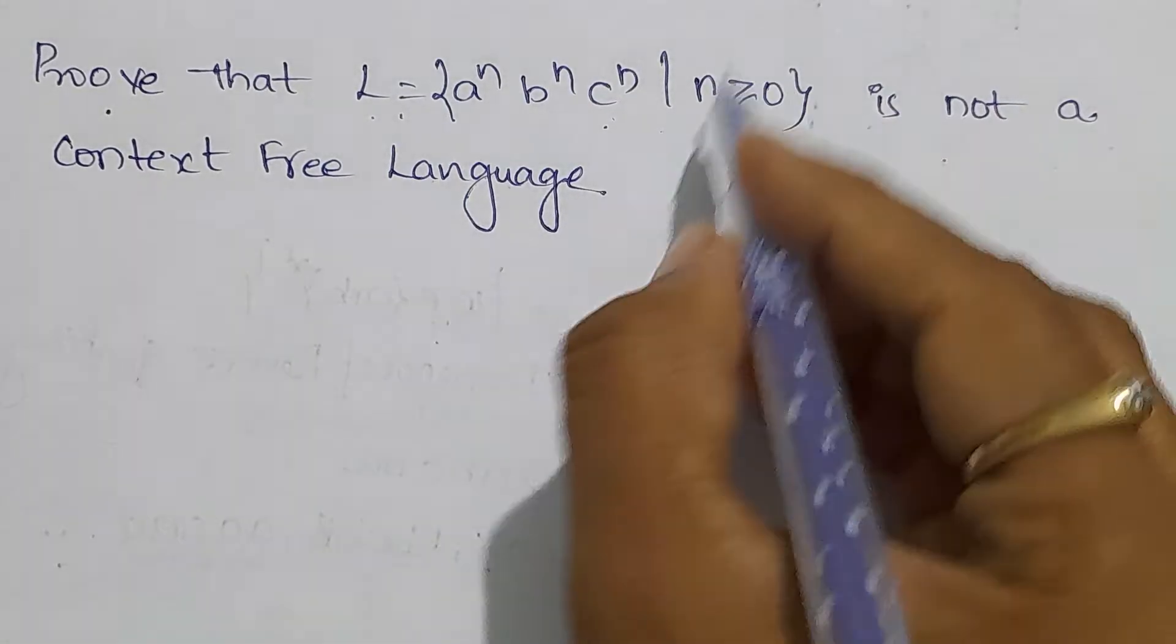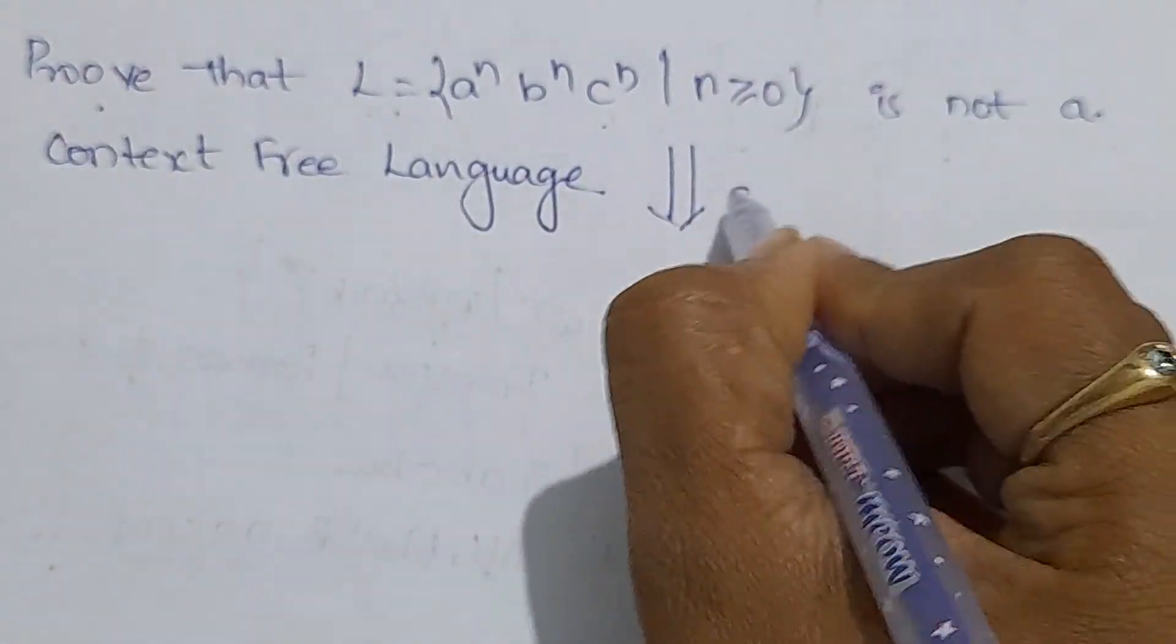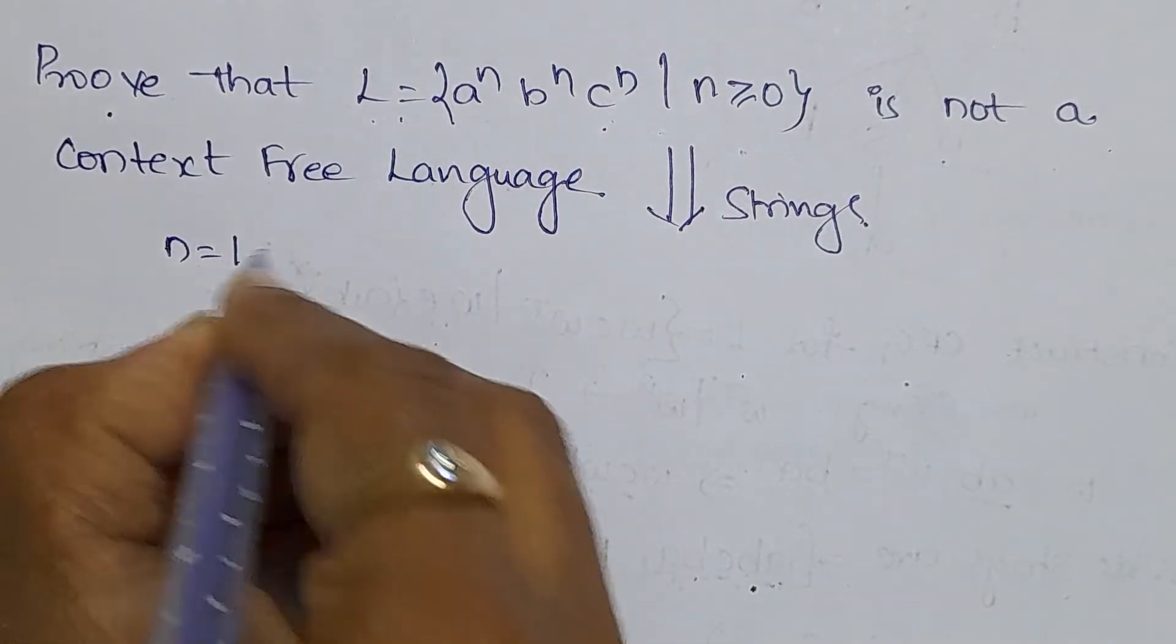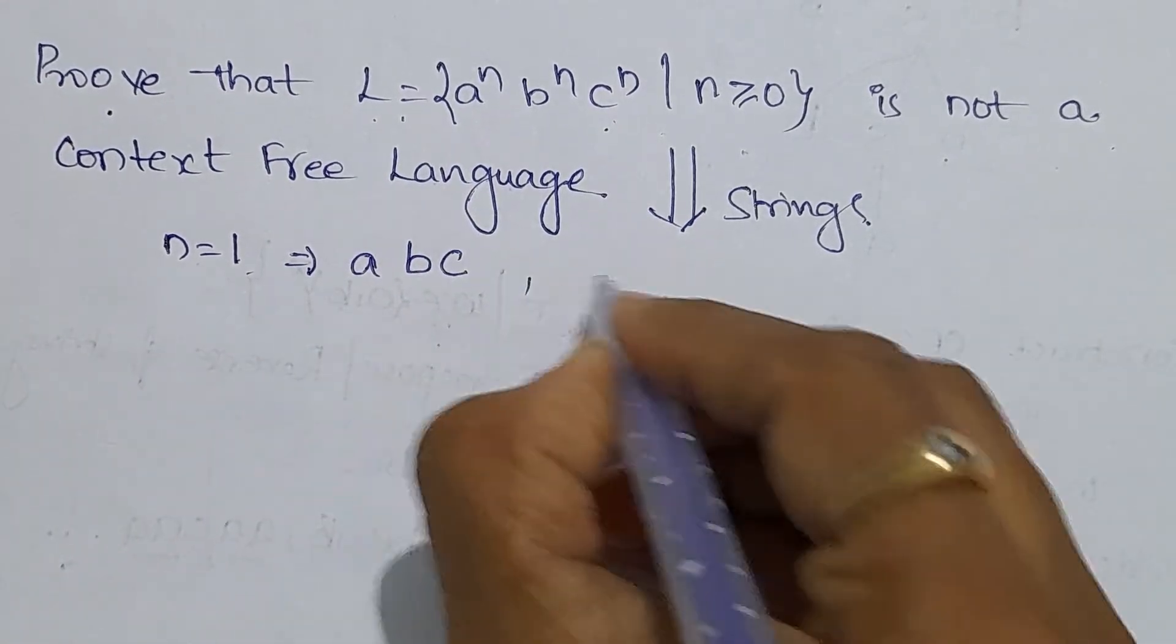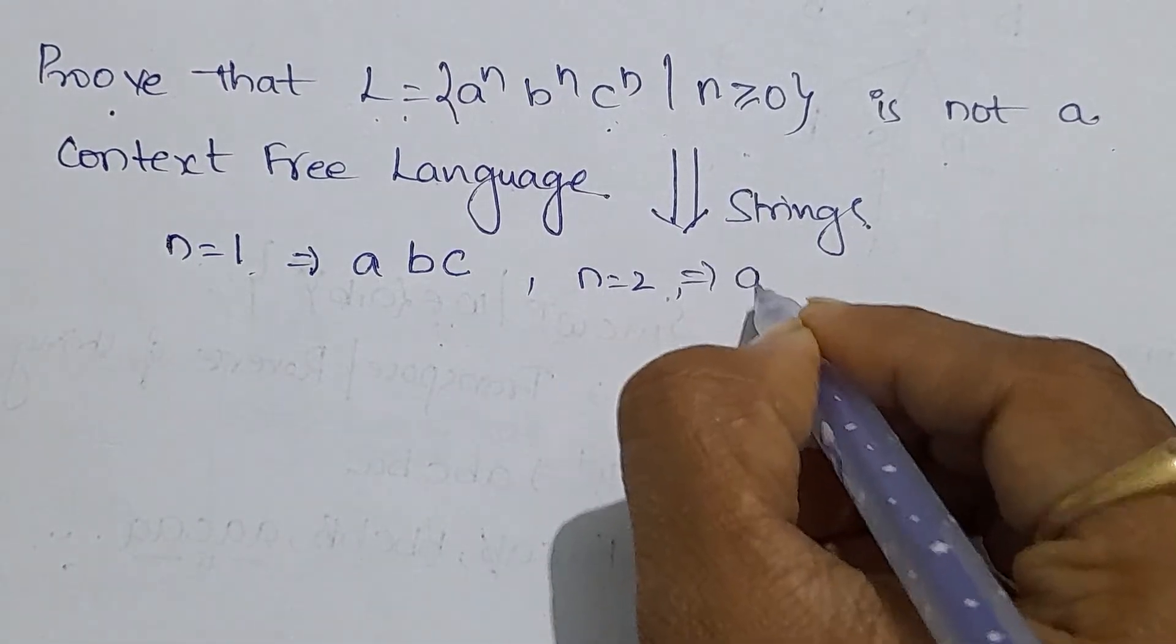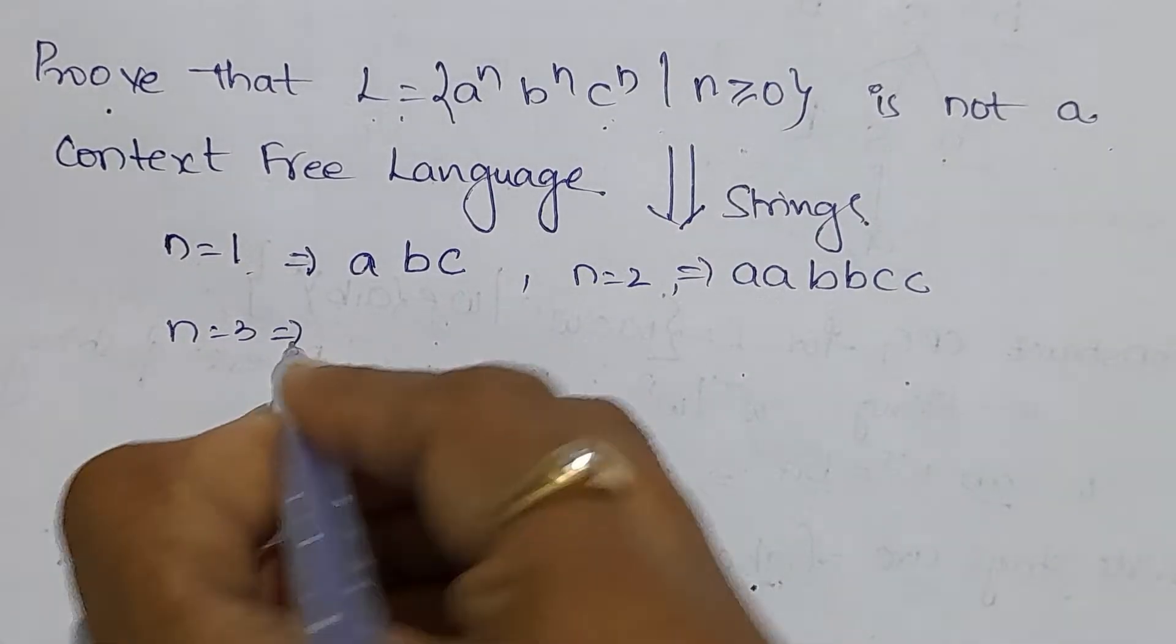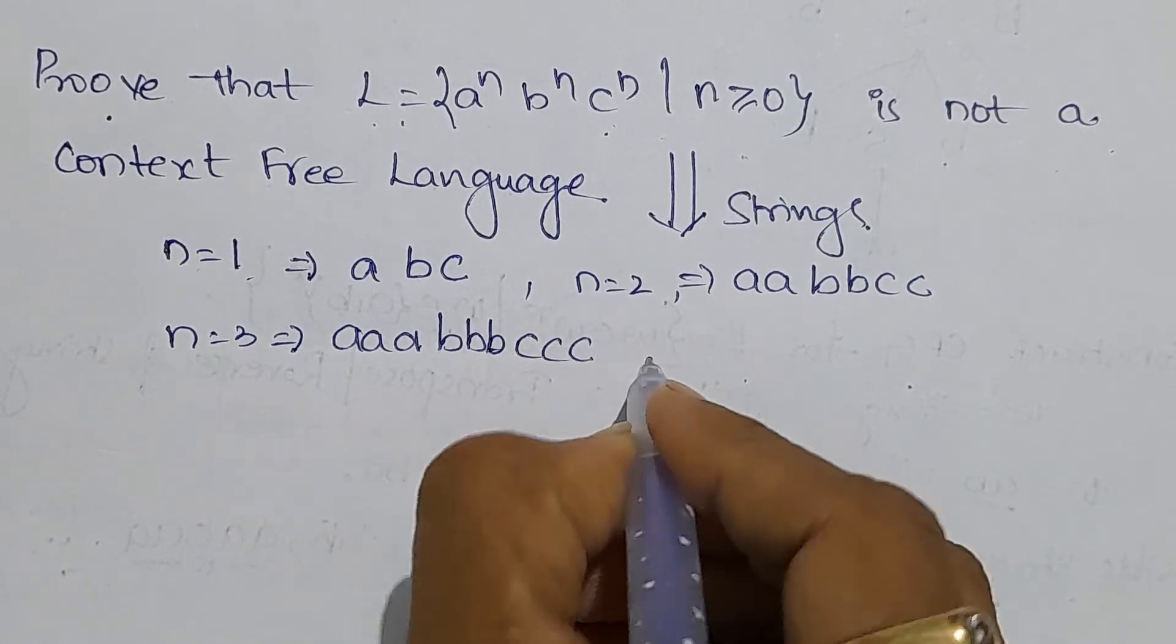Let's look at example strings in the language. If n=1, the string would be abc. If n=2, the string would be aabbcc. If n=3, the string would be aaabbbccc.